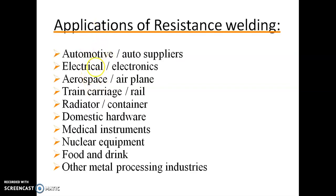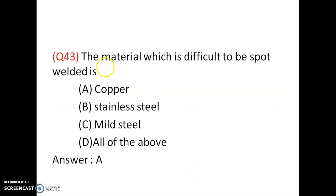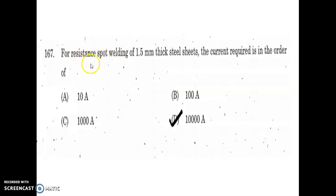Applications of resistance welding: automotive, auto supplies, electrical, electronics, aerospace, train carriage welding, radiator, domestic hardware, medical instruments, nuclear equipment, food and drink instruments, and other metal processing industries. The material which is difficult to spot weld is copper. For resistance spot welding of 1.5 mm thick steel plates, the current required is in the order of 10,000 amps. Option D is correct.